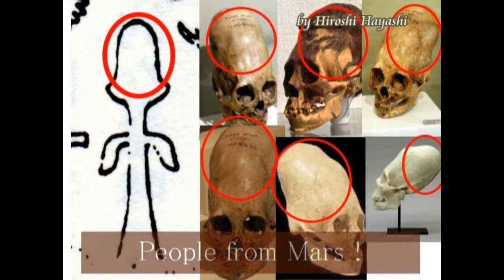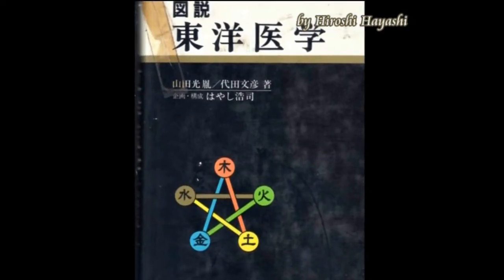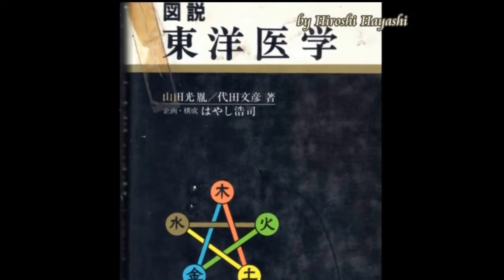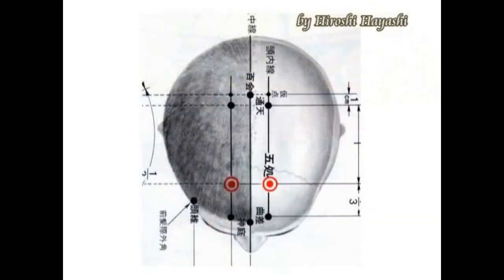火星から来た人と断言していいわけですけれども、この超頭人間の頭蓋骨には、あるべき骨がありません。これから検証してみます。人間の頭蓋骨とは骨の数が違うと言いましたが、これは人間の頭蓋骨です。